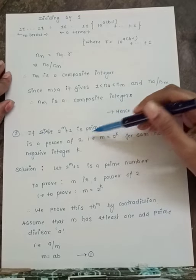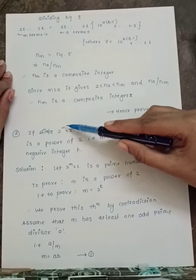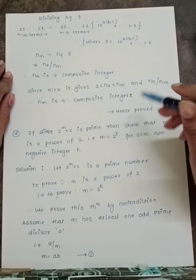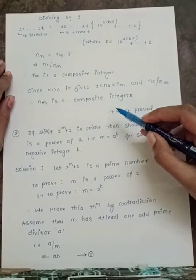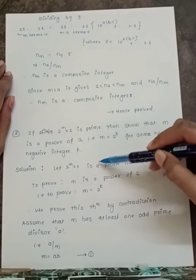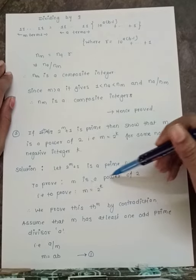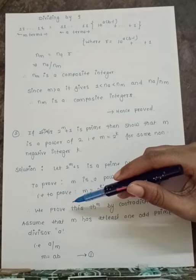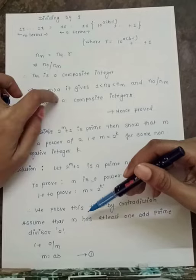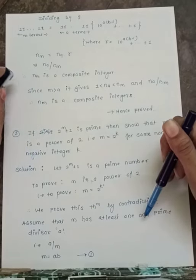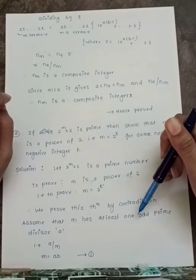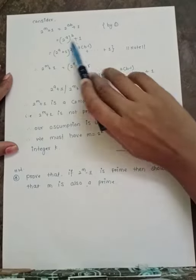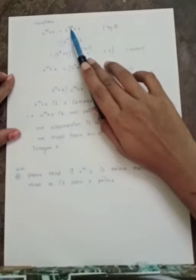Example 2: If 2^m + 1 is prime, show that m is a power of 2, i.e., m = 2^k for some non-negative integer k. We prove this by contradiction. Assume that m has at least one odd prime divisor a, so a divides m — say m = ab — equation 1.